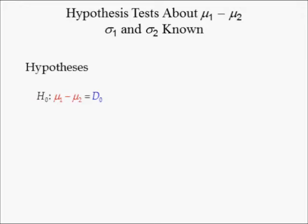To test this claim, you first state the hypothesis. The politician's claim can be rephrased as: the difference in female and male worker annual earnings equals $5,000. This phrase is what we call the null hypothesis, or H0. The null hypothesis is always associated with the equals sign.